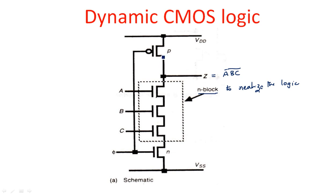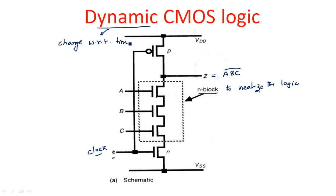The PMOS transistor in the pull-up and the NMOS transistor in the pull-down are both connected to a common input named phi, which is the clock signal. The name 'dynamic' means changing with respect to time, and this is achieved by using a clock input. The clock continuously alternates between on and off periods — one, zero, one, zero — depending on the clock period.